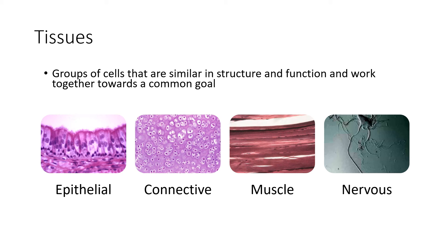The tissues are: epithelial — there are many different kinds of epithelial tissues you'll need to learn about; epithelial tissues line things, basically. And connective tissue — this is pretty self-explanatory, it connects other stuff.